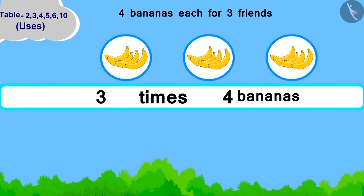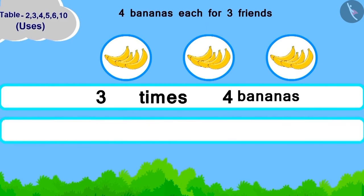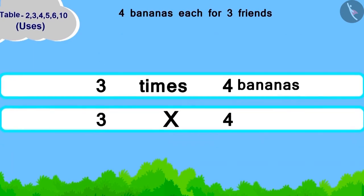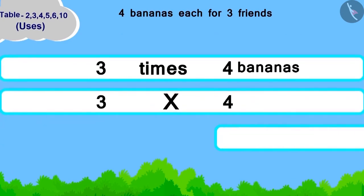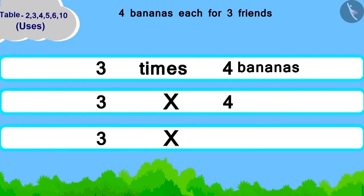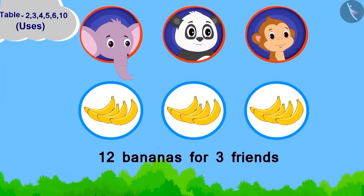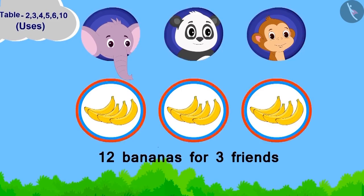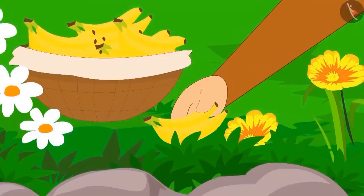Three times four bananas. Now, how will we write it in the form of multiplication? Three multiplied by four. Children, can you write its answer by using the table of four? Absolutely right. Chanda will have to take twelve bananas for her three friends.